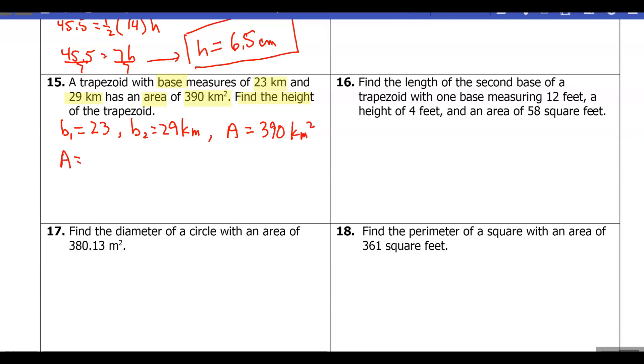And we know the formula for a trapezoid—if you need to scroll back up to your notes, feel free to do that; otherwise you can just refer back to it. It's one-half times h times b1 plus b2. We have four variables here, and we're going to substitute